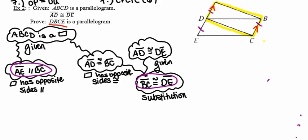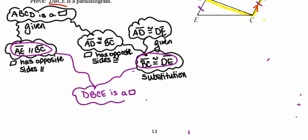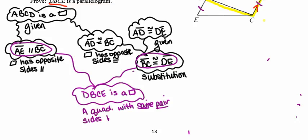At this point in the proof, the left and right sides of quadrilateral DBCE are both parallel and congruent. Because we have the same pair of sides that are both parallel and congruent, we can conclude that DBCE is indeed a parallelogram, since a quadrilateral with one pair of sides that are both parallel and congruent is a parallelogram.